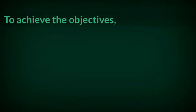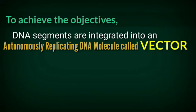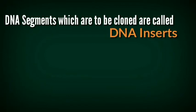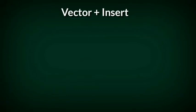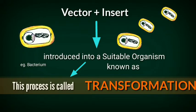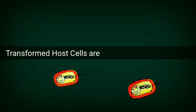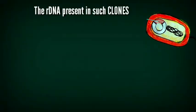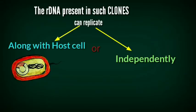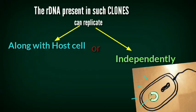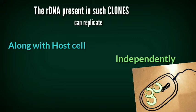To achieve these objectives, DNA segments are integrated into an autonomously replicating DNA molecule called a vector. Common vectors include bacterial plasmids, DNA viruses, etc. DNA segments which are to be cloned are called DNA inserts. When the vector plus insert is introduced into a suitable organism known as a host — for example, a bacterium — this process is known as transformation. Transformed host cells are then selected and cloned to generate a large number of clones. The rDNA present in such clones can replicate either along with the host cell or independently.